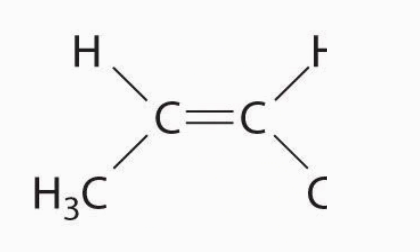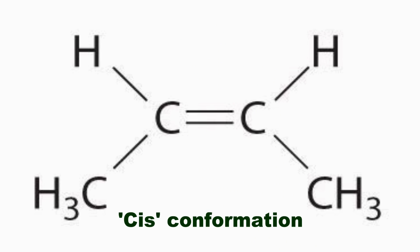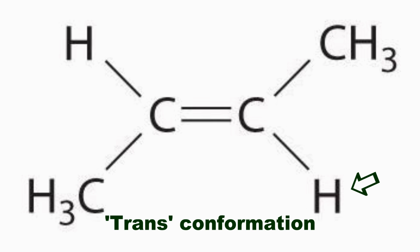A byproduct of the hydrogenation process is the creation of partially hydrogenated oils, or trans fats. This is a situation where one of the two hydrogen atoms across a double bond will relocate to the opposite side of the molecule, diagonally across the double bond.